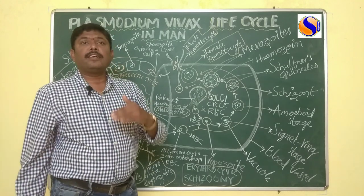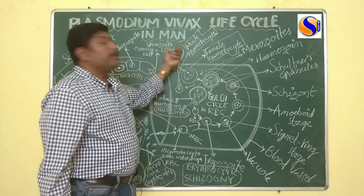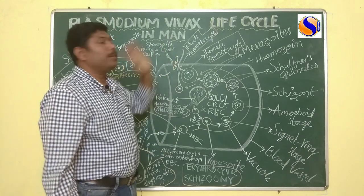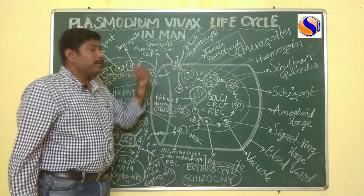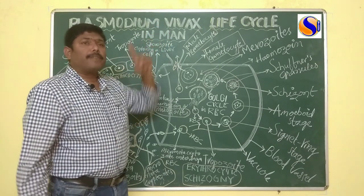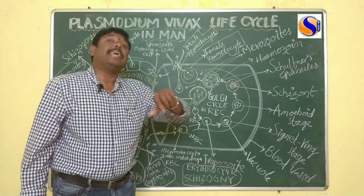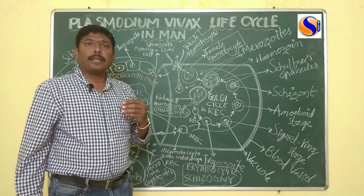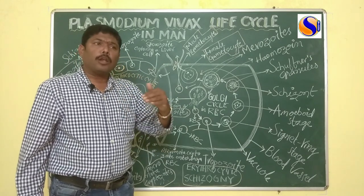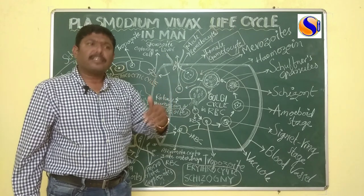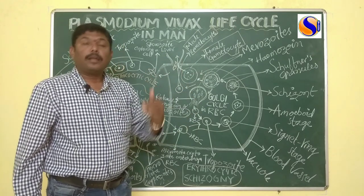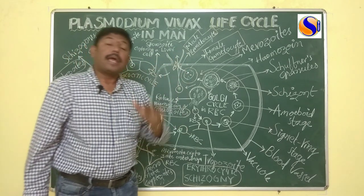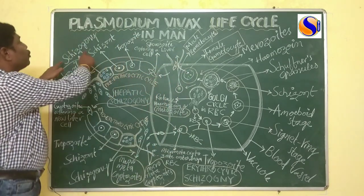Now I am discussing about the secondary host — man — in which the Plasmodium completes its life cycle. In man, the Plasmodium vivax completes an asexual life cycle, and that asexual life cycle we call Schizogony.